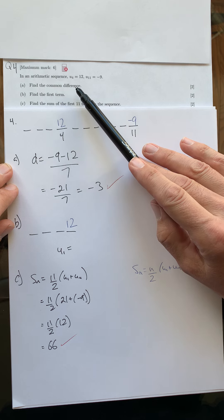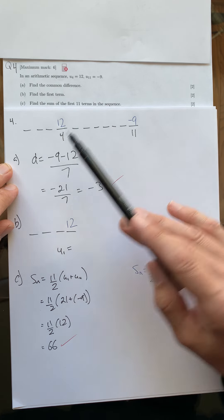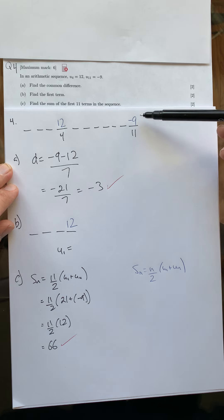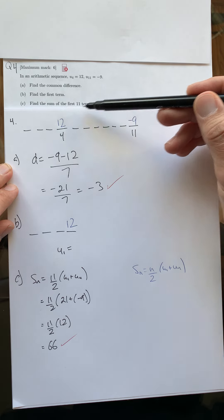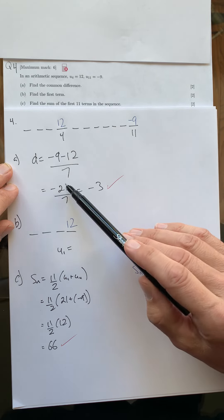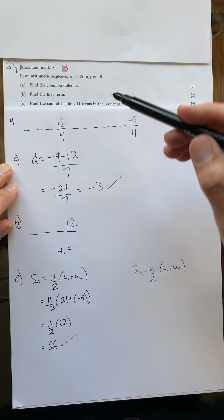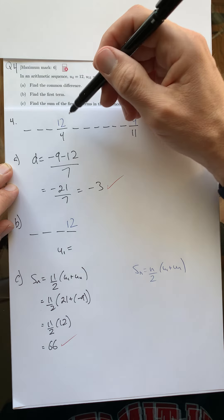I want to find the common difference, so d is my common difference. It's equal to the difference between negative 9 and 12. So how far have I gone down here? Take negative 9 take away 12, that gives me the total difference. I have to do that difference. I have that difference occur in one, two, three, four, five, six, seven steps.